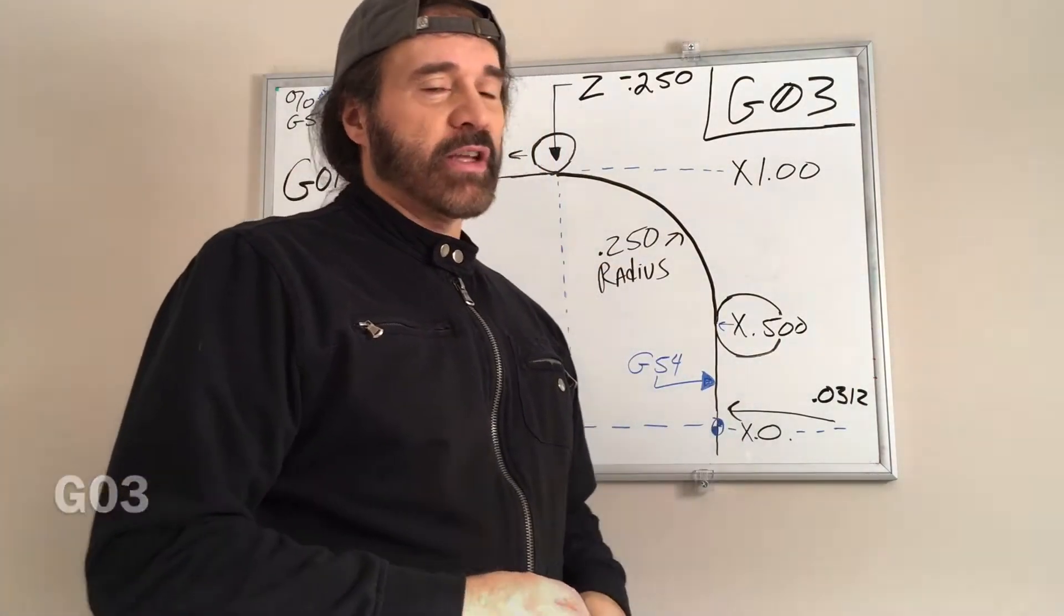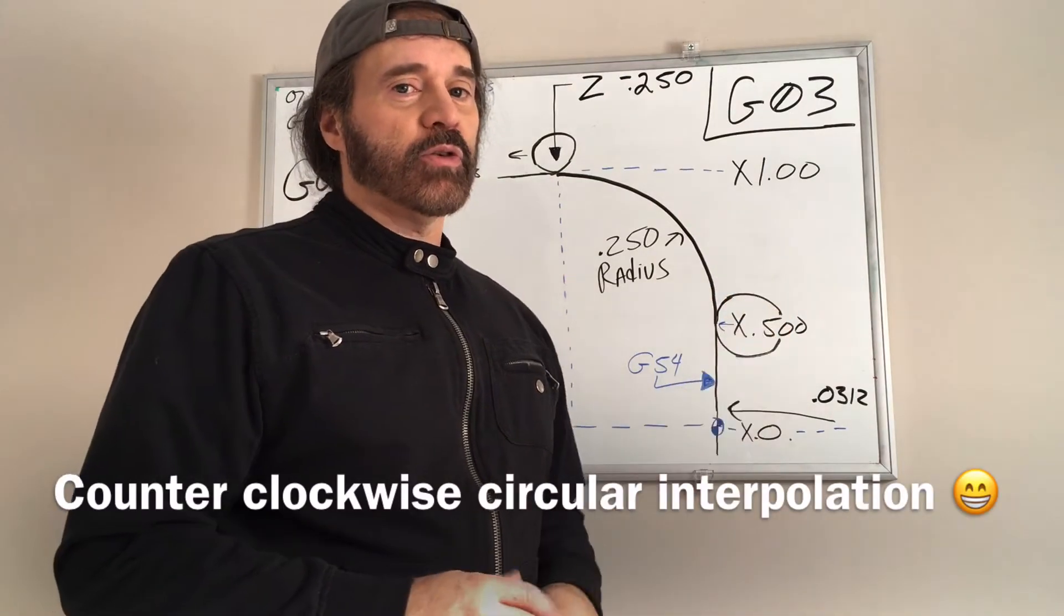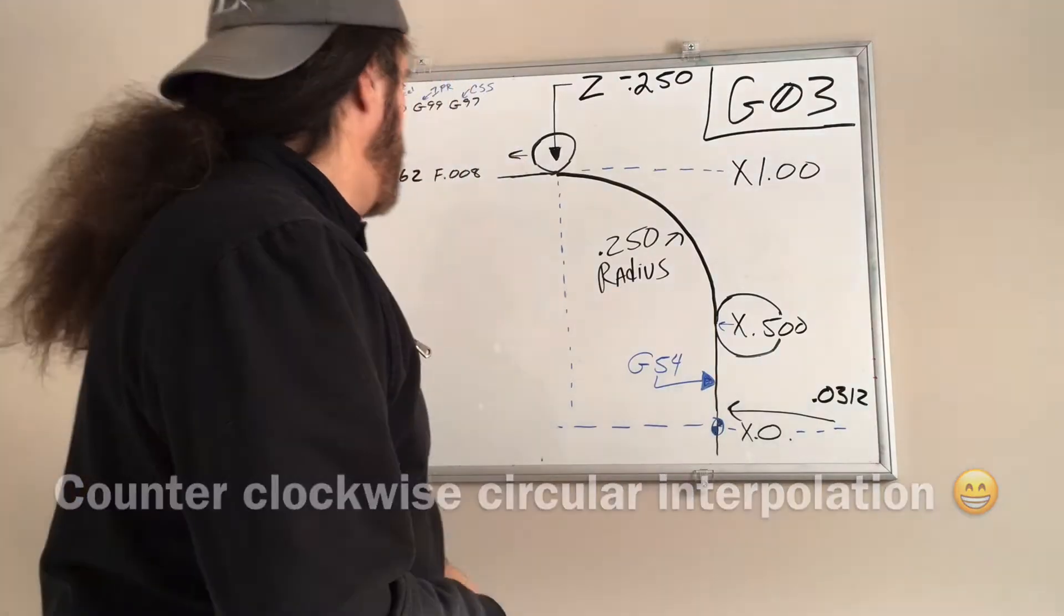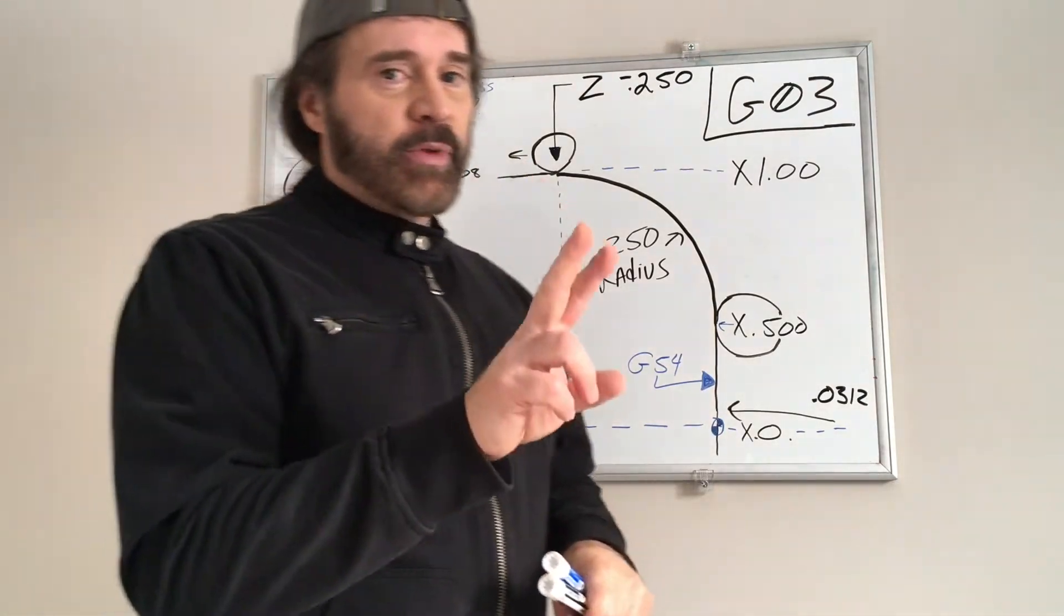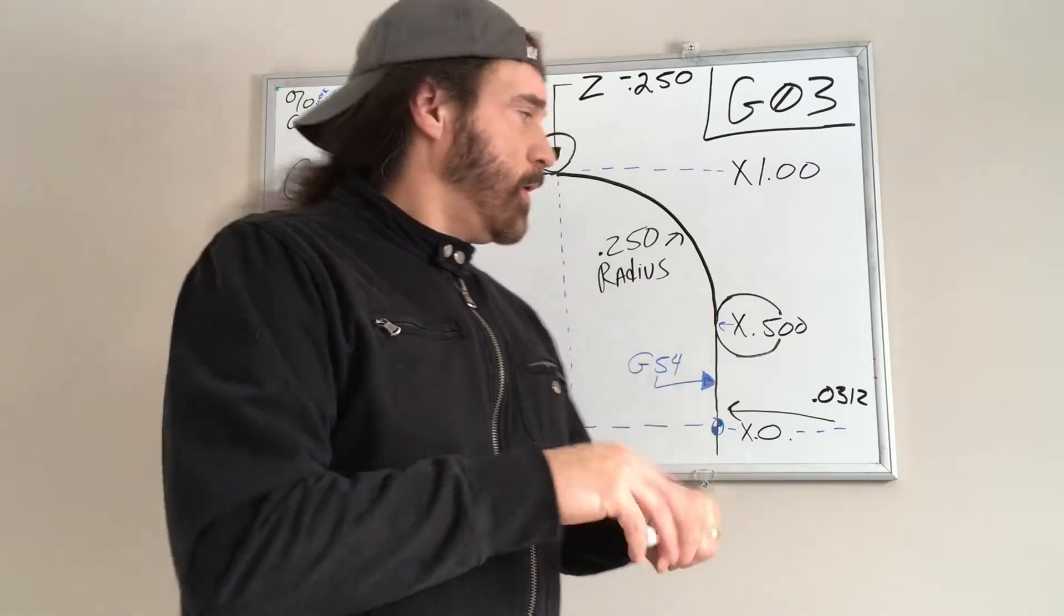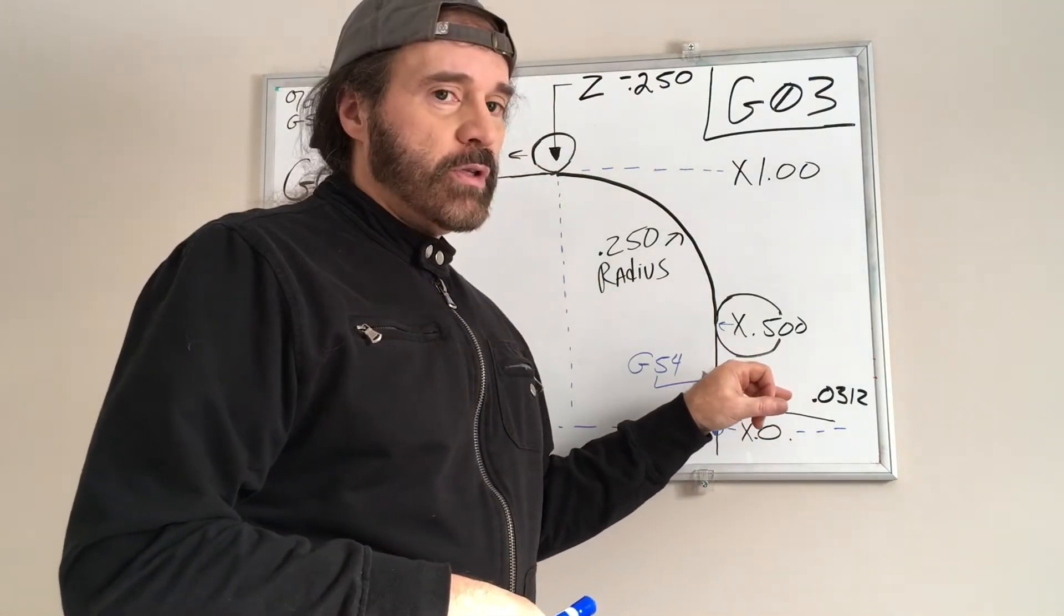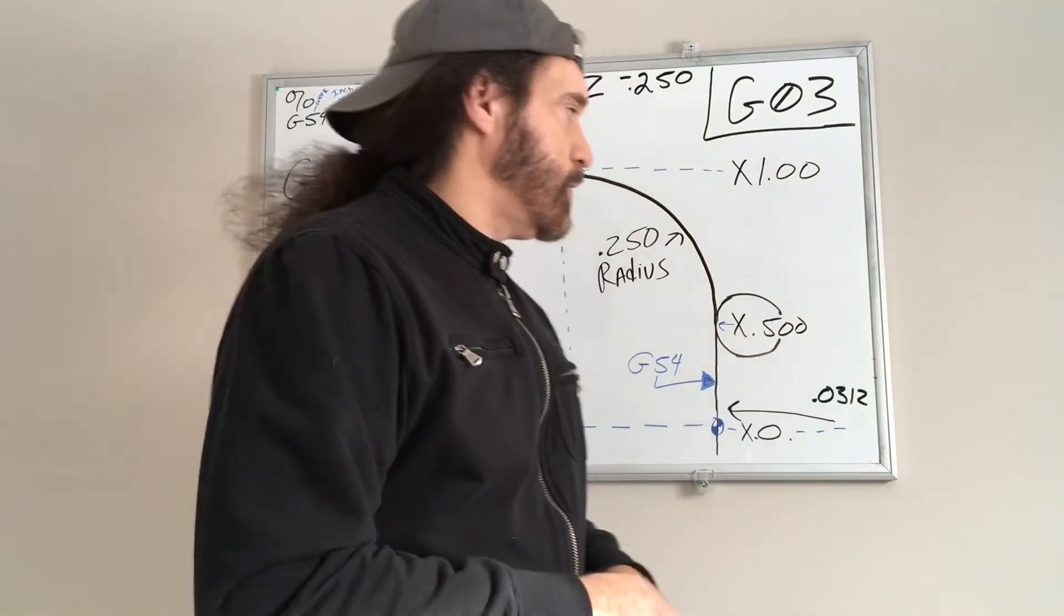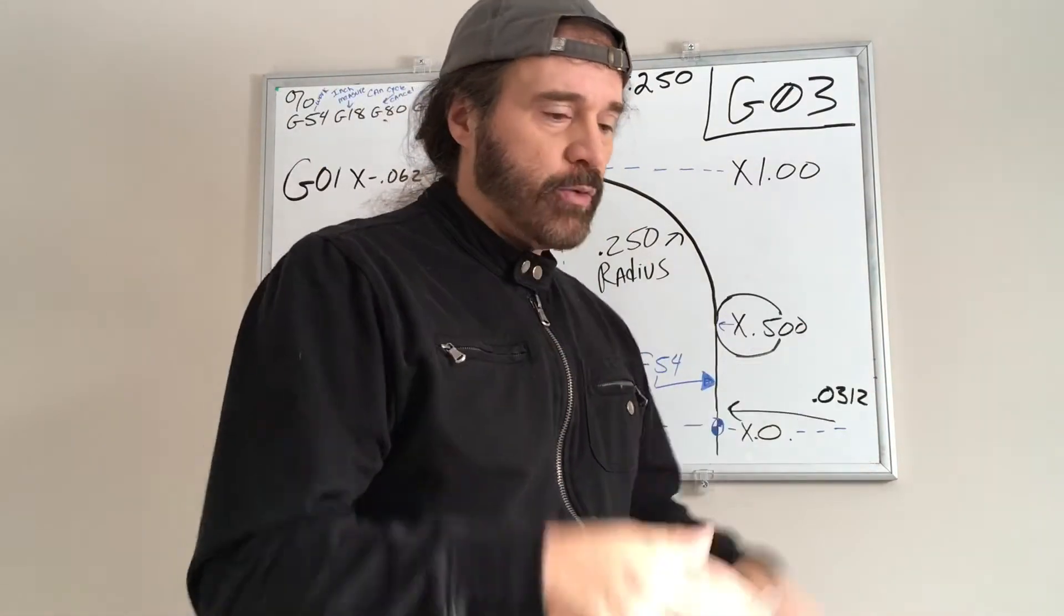It's also known as a counterclockwise circular interpolation. Long word. So I'm going to describe this in two ways, using cutter comp and doing it manually if you are using a tooling bit that has a radius on it. I'm not going to ramble on, I'm just going to get right into it.